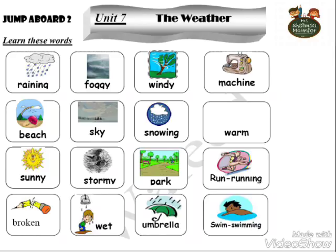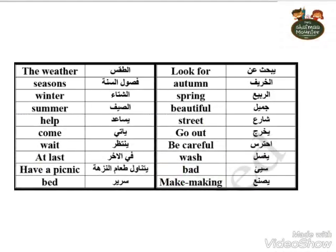Raining, foggy, windy, machine, beach, sky, snowing, warm, sunny, stormy, park, run, broken, wet, umbrella, swim. Again: raining, foggy, windy, machine, beach, sky, snowing, warm, sunny, stormy, park, run, broken, wet, umbrella, swim. Okay, we have more new words.